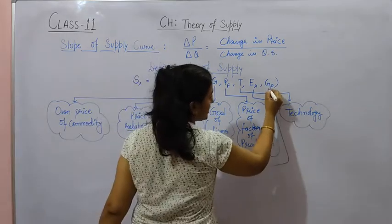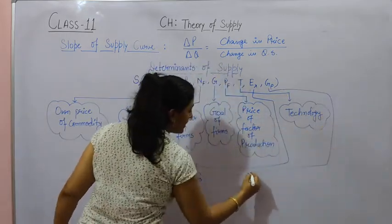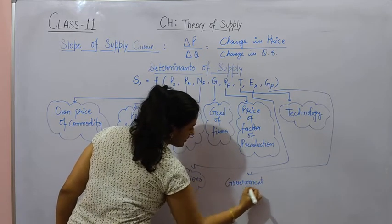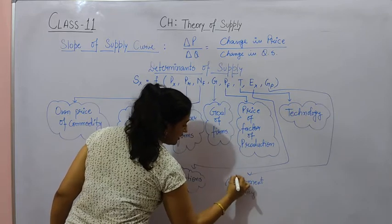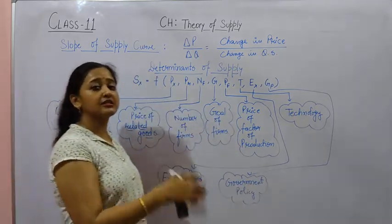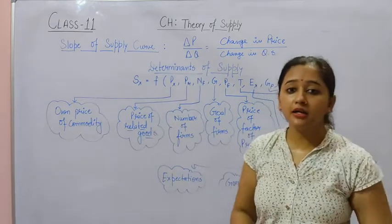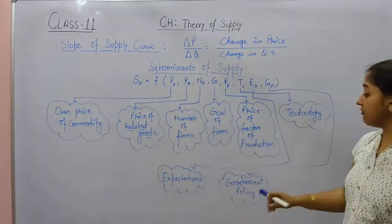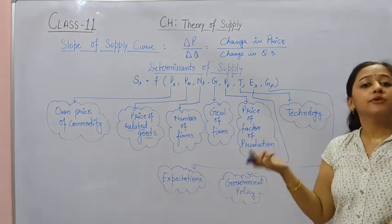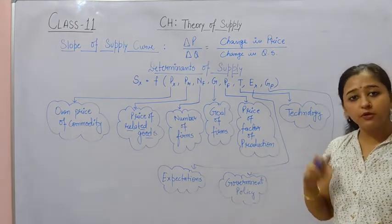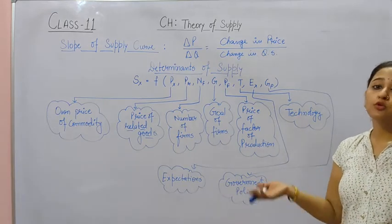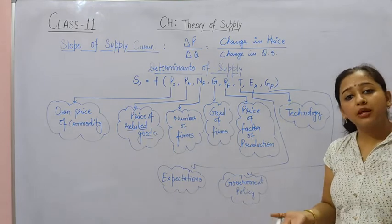The last determinant is GP, representing Government Policy. Government policies related to production — such as taxes and subsidies — affect supply. If the government imposes more taxes on production, the cost of production increases and the producer will reduce supply. If taxes are less, the cost of production decreases and supply will increase.